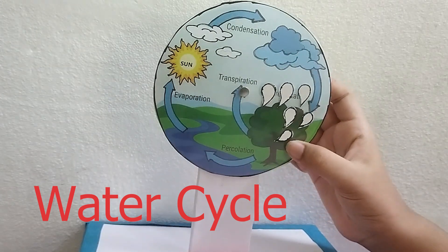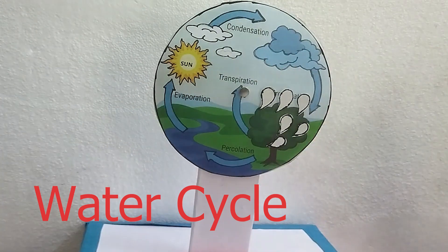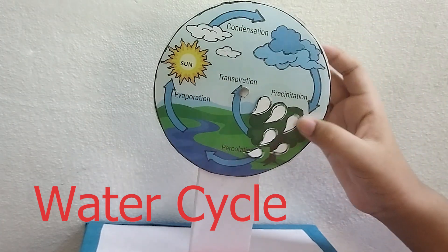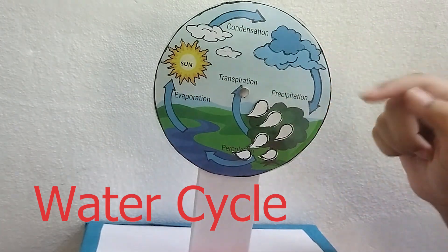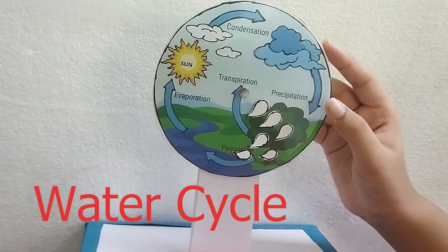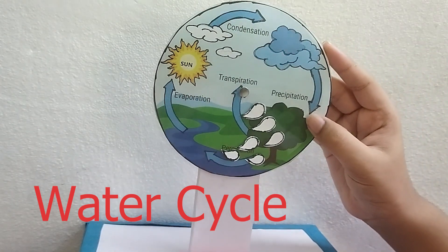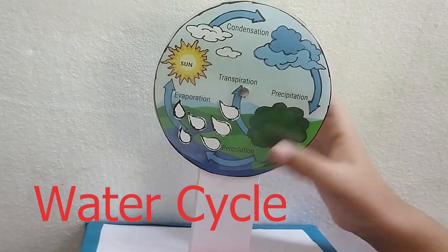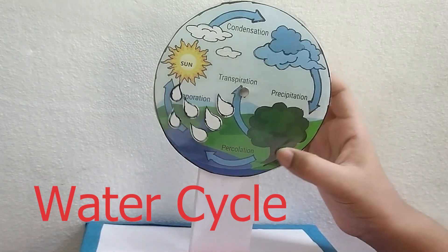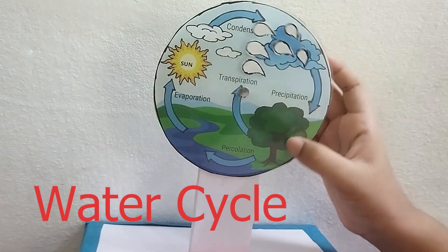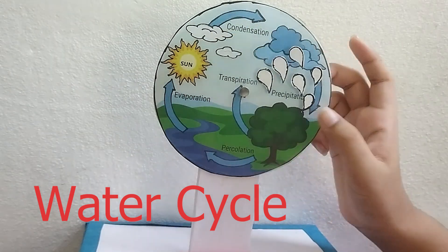Now these water droplets land on trees or rivers. Trees have transpiration, so the water droplets can transpire — they can reach the air again. Some of this water reaches the rivers again, and that cycle repeats over and over. This is what we call the water cycle, and it happens every single day.